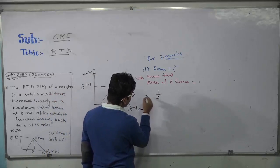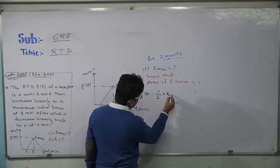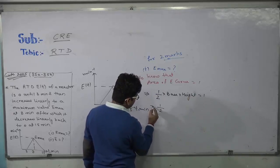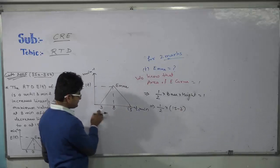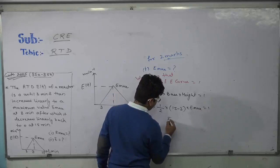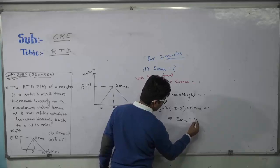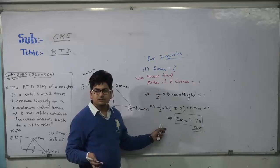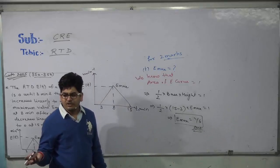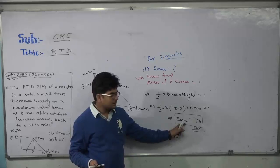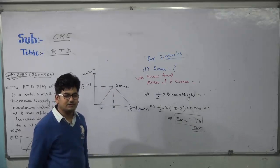Since the E curve forms a triangle in this case, the area of a triangle is one-half times base times height, and this equals 1. The base is (15 − 3) = 12, and the height is E_max. So: ½ × 12 × E_max = 1, giving E_max = 1/6. That is the answer — a simple problem using the triangle area formula.